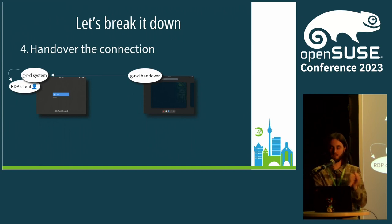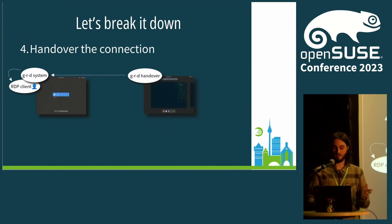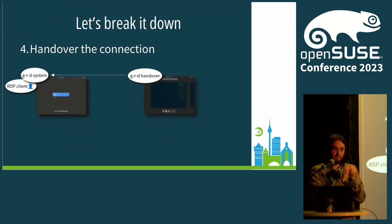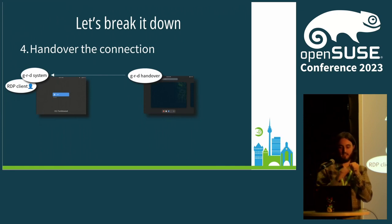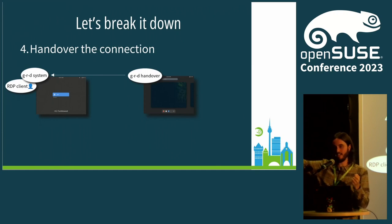The system daemon sends this server redirection packet with the information that the handover daemon provided — the one-time credentials and also the routing token — to the RDP client. The RDP client will then disconnect and reconnect again. When the RDP client reconnects, it sends this routing token in the first bytes. The system daemon picks up these first bytes, finds the routing token, and knows that this RDP client must connect with this handover daemon.